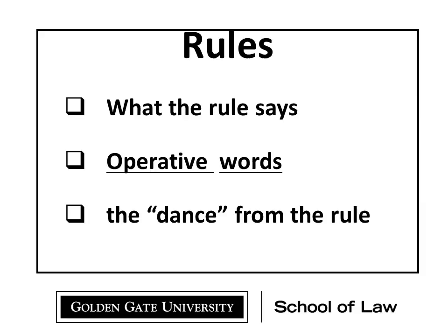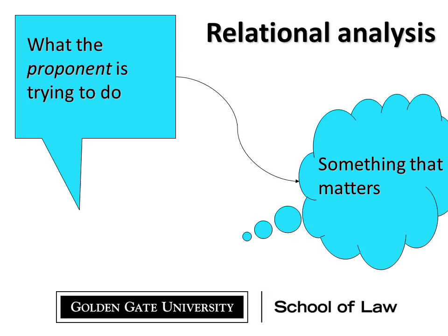Knowing the perspective that we come from, how do we take these operative words and make sure we always know how to craft the argument from our side? What is that dance as proponent saying it's in and as opponent saying it's out? Really for relevance, understand this broad fact: it's a relational analysis.